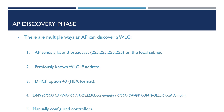It's worth noting that during the discovery phase, any controllers discovered will report their load, including the ratio of the number of access points connected to the controller compared to the number of access points the controller can support. The AP will use all methods to discover as many wireless controllers as possible before proceeding to the join phase. The discovery phase will not stop as soon as it finds a controller — it will continue discovering until all options have been completed.